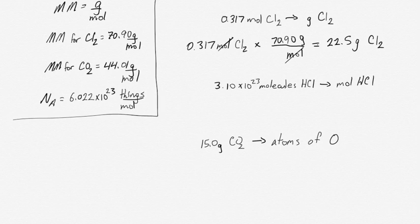Our second example is converting molecules of HCl into moles of HCl. We need a conversion factor that goes from molecules into moles, and this one's a little less obvious. We use Avogadro's number. Remember, Avogadro's number is 6.022 times 10 to the 23 things per mole. It can be literally anything.